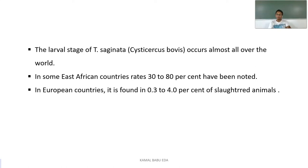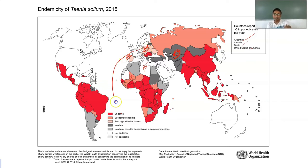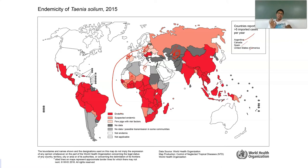Regarding Taenia solium, an endemic distribution map shows bright red indicating endemic areas, light red indicating suspected endemic areas, very light red indicating areas with few cases but risk factors, and dark gray indicating no data available. Countries reporting more than five imported cases per year include Argentina, Canada, Spain, and the United States of America, according to the World Health Organization.